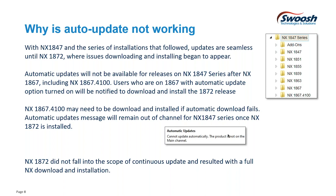You can see this in the icon. It doesn't matter how you switch your customer defaults to 'not notify me' — it's still going to be there. If you hover your mouse over the gray light, that's the message you're going to see. With 1867.4100, you had to do a full install. I wasn't able to click the button in the top right corner and have it download and install automatically; it just didn't work. That's where we started seeing the issues.